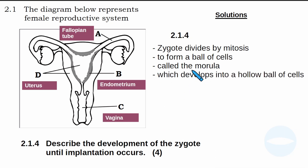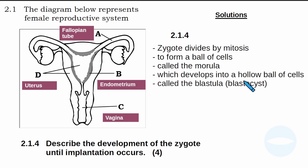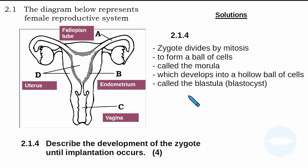This morula will develop into a hollow ball of cells. The morula also divides by mitosis and develops into a hollow ball of cells called a blastula or blastocyst. The blastocyst is then implanted onto the uterus wall. If you explain it like this, you will get all four marks.